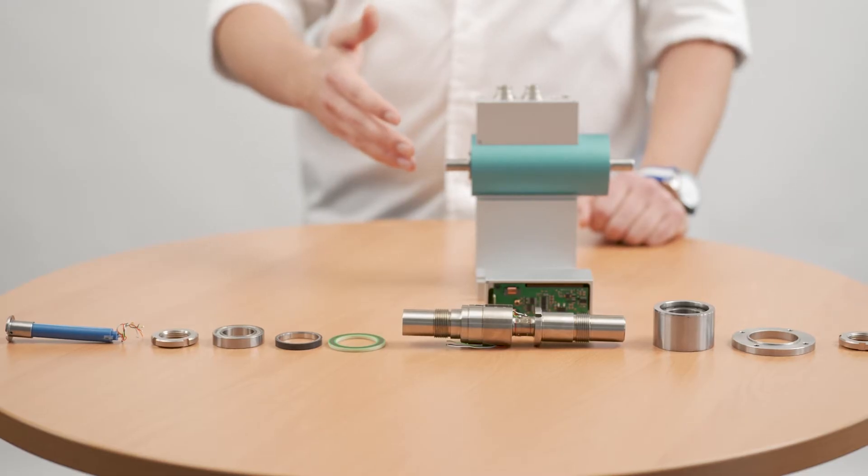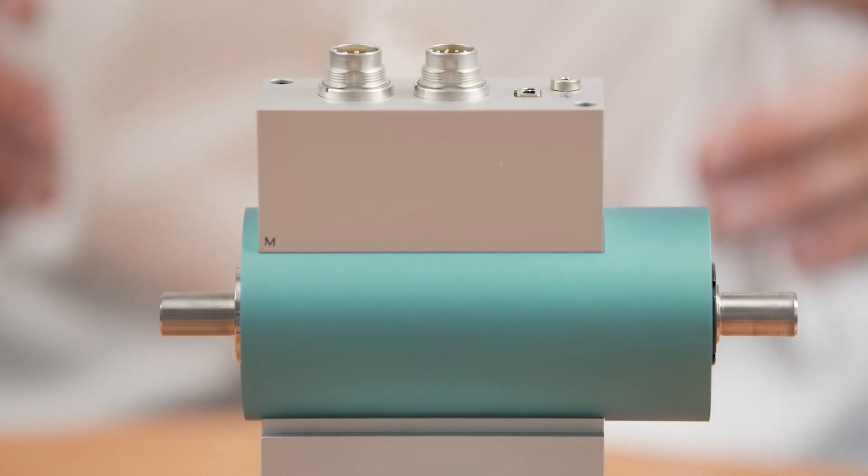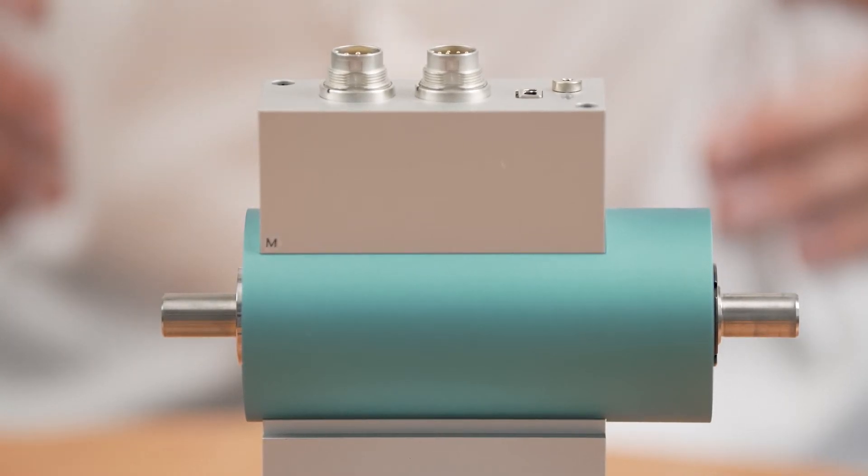Here we can see a torque sensor and selected components. The core of the sensor is the measuring shaft, which consists of a special hardened steel.